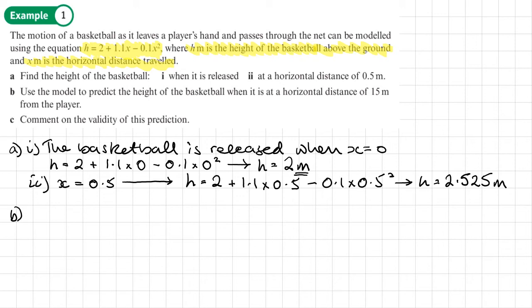Part B: use the model to predict the height of the basketball when it is at a horizontal distance of 15 meters from the player. Here x is going to be 15, so we substitute that into the equation. H equals 2 plus 1.1 times 15 minus 0.1 times 15 squared. That gives a height of negative 4 meters.